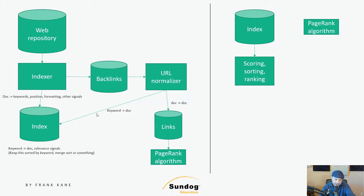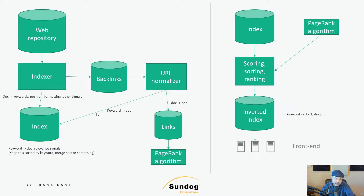At this point, the two main pieces we have are a big index that maps keywords to documents with various signals of that keyword's relevance, and something computing PageRank given a database of all links between documents on the web. Something will need to score all of those relevant signals into some sort of score we can use for ranking. If the forward index isn't already sorted by keyword, we'll probably want to do that so we can more quickly rank each document the keyword appeared in — although if we're using Spark, it might optimize that on its own. Finally, we'll have a ranking stage that takes each keyword, the measure of that keyword's relevance within each document, and the document's PageRank score to come up with a final ranking for a given keyword. This is where the term 'learning to rank' comes from — potentially deep learning could be employed to learn the best way to combine PageRank and features from documents to produce the best rankings. Finally, we have what's needed to write out our inverted index.